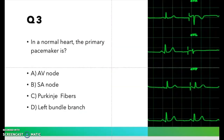Question number three: in a normal heart, the primary pacemaker is — A) AV node, B) SA node, C) Purkinje fibers, or D) left bundle branch. Take a moment and think about it, and then I'll give you the correct answer.